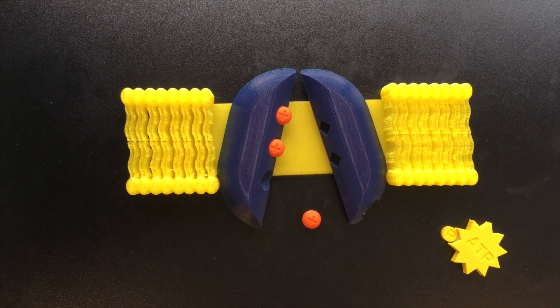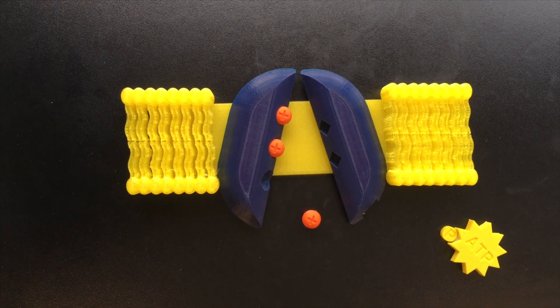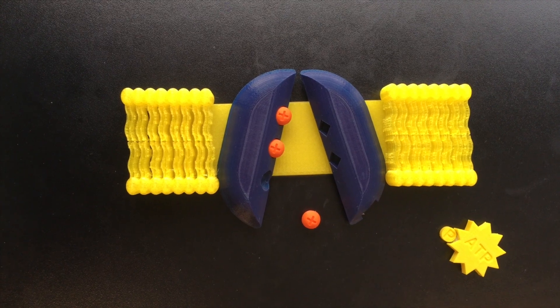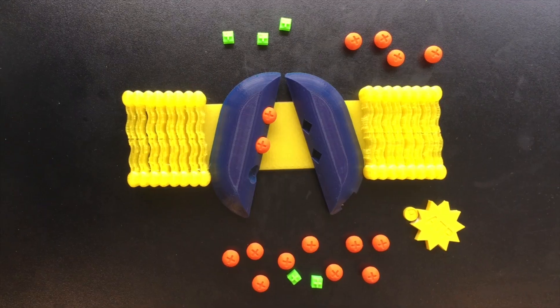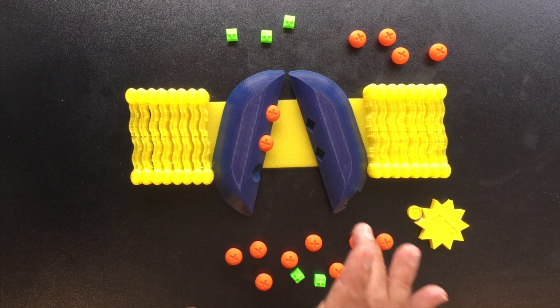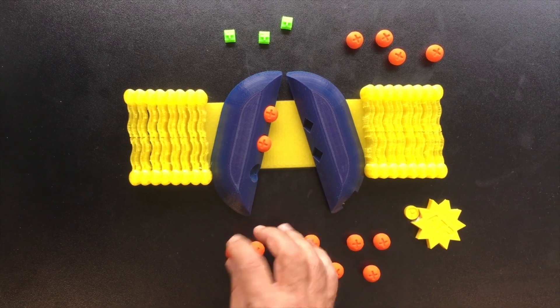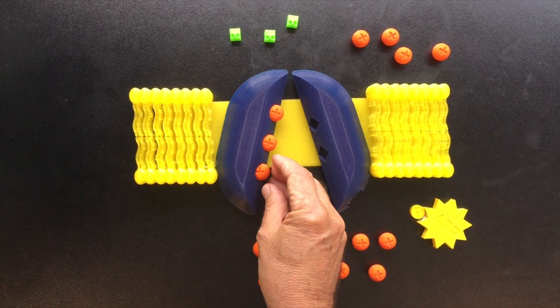So how does a living cell establish a voltage difference across its cell membrane? The transmembrane protein, in its original shape, has the capacity to pick up three sodium ions.